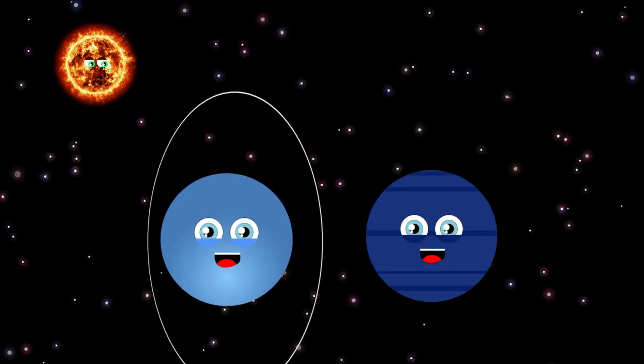We're the ice giants, Uranus and Neptune, we're the seventh and eighth planet in the system. We're at the edge of the solar system, there's many more objects beyond, but now let's go and explore.